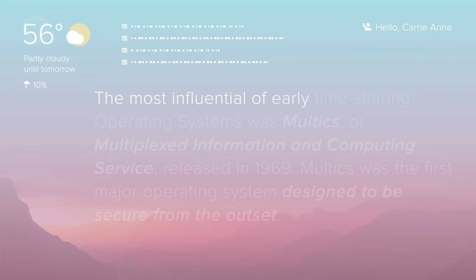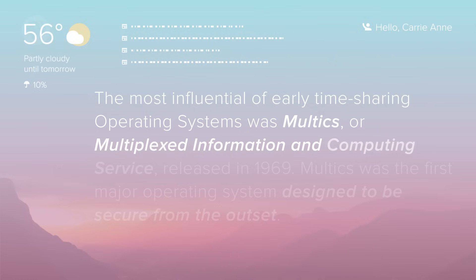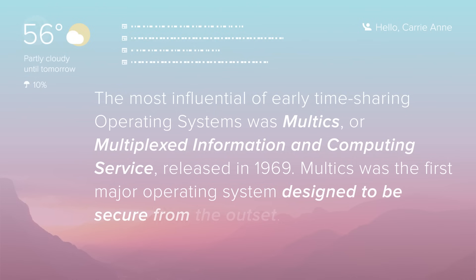The most influential of early timesharing operating systems was Multics, or Multiplex Information and Computing Service, released in 1969. Multics was the first major operating system designed to be secure from the outset — developers didn't want mischievous users accessing data they shouldn't, like students attempting to access their final exam on their professor's account. These features meant Multics was really complicated for its time, using around 1 megabit of memory — that might be half of a computer's memory just to run the OS.